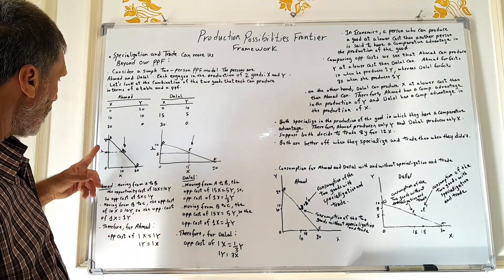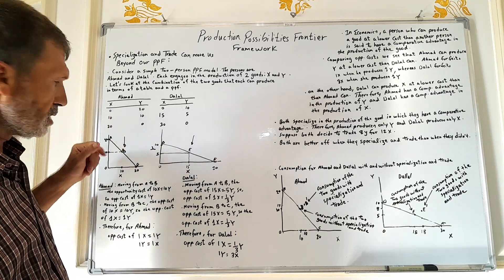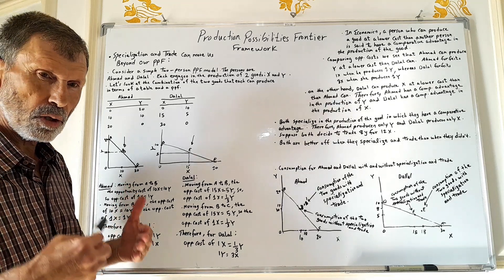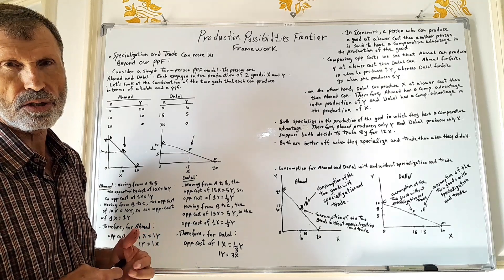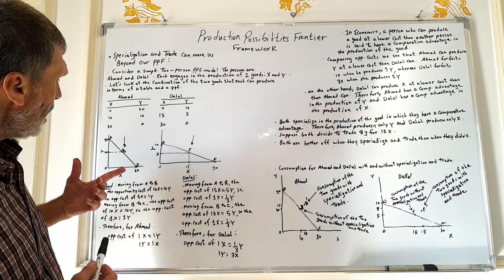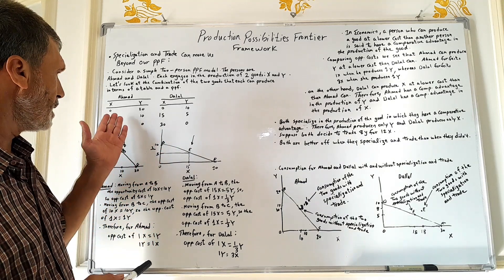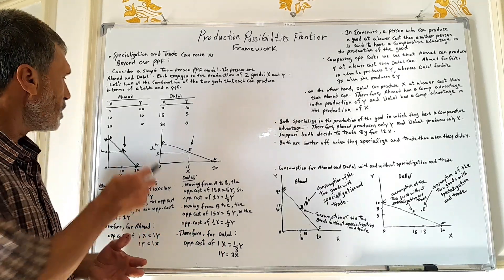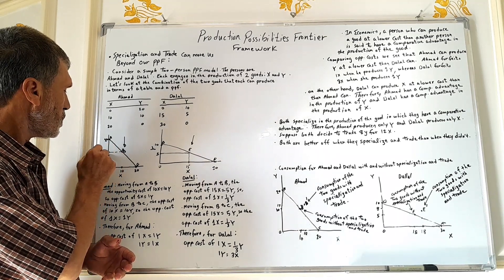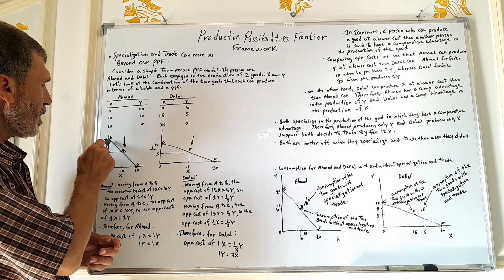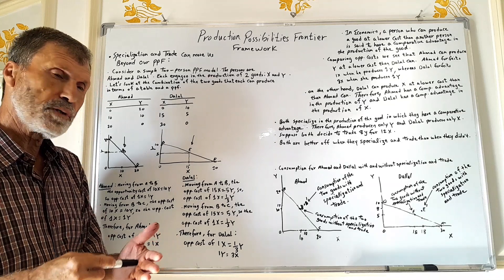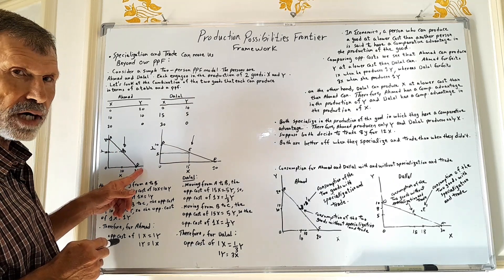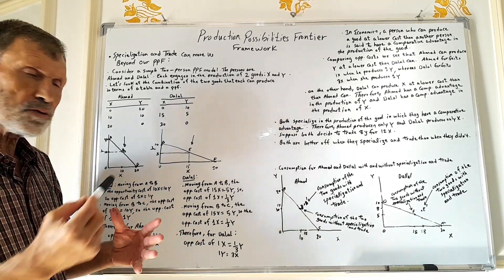In terms of the PPF, these combinations form a straight line, showing a constant opportunity cost model. As a consumer, Ahmed likes to consume both X and Y, so he should be at combination B, consuming 10Y and 10X. He can't be at A (no X) or C (no Y), so if he likes both goods, he should be at combination B.